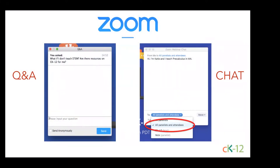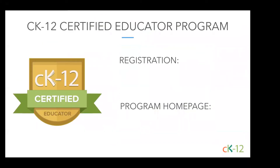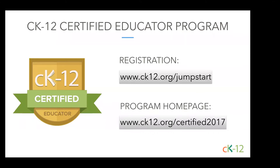The Q&A window is for any questions you want us to answer — that's what we'll check. We get tons of questions during these webinars, so post there if you want us to confirm we answered it. The chat window is already super active, so go ahead and send to all panelists and attendees to share who you are, where you're coming from, and any thoughts on the program. For the Certified Educator Program, the registration page is ck12.org/jumpstart, and our program page is /certified2017, accessible from the Certified Educator Program link at the bottom of any CK-12 page.